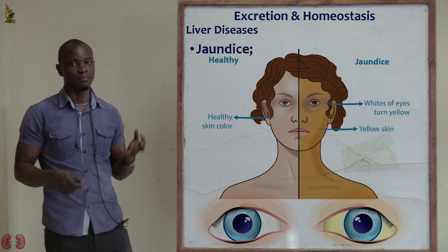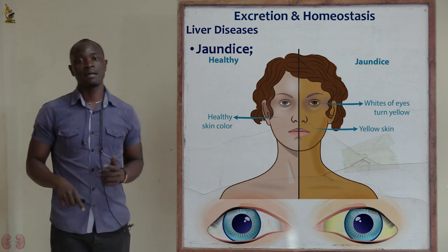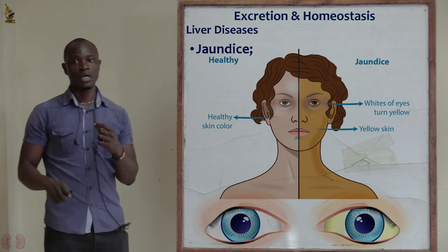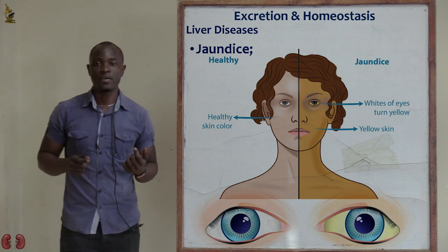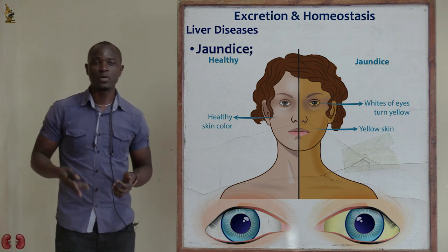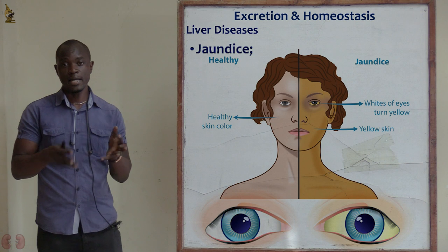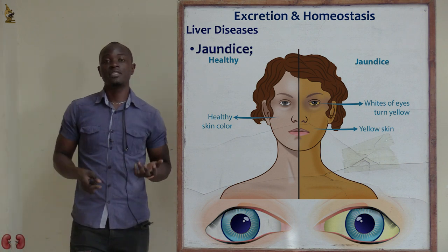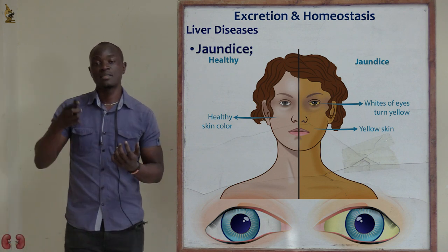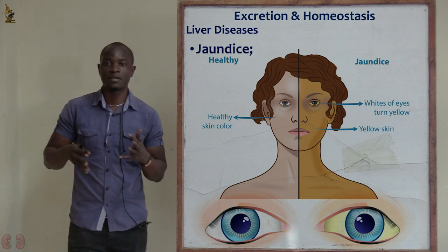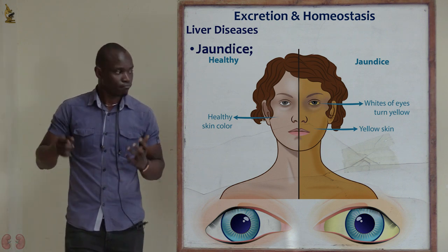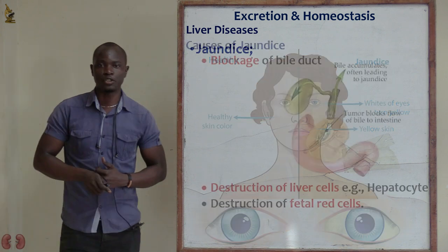As you can see in this diagram, we have the normal face and then the jaundiced face. People with jaundice have yellow skin pigmentation — their body, clothes, and eyes all become yellow. This is because there is a lot of bilirubin or bile in circulation in the blood, which causes the yellow skin pigmentation.